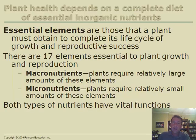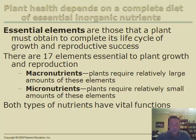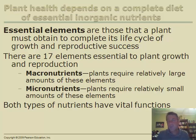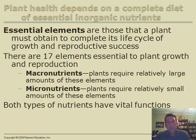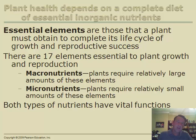Now we want to look at the nutrients in the water that the plant must have for optimal growth. There are about 16 or 17 essential nutrients — my outline lists 16, the book lists an extra one, nickel, making 17. These are divided into two groups: macronutrients, which the plant needs in large quantities, and micronutrients, which are needed in smaller quantities but are still required for an optimal diet.